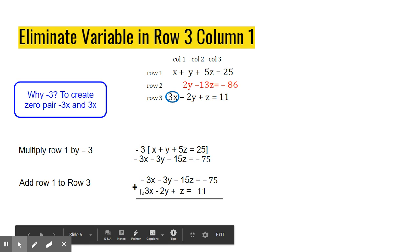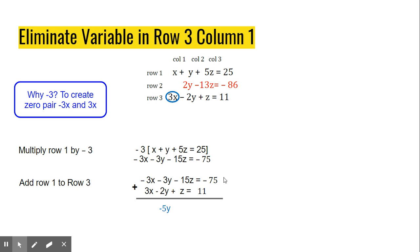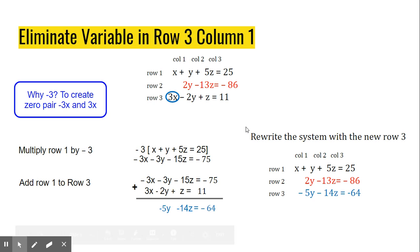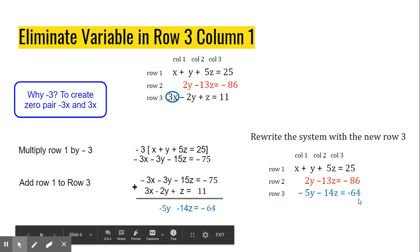Once again, I will be able to eliminate this 3x because this is a zero pair. It cancels out. So I have negative 3y plus negative 2y. That gives me negative 5y. I have negative 15z plus z. That gives me negative 14z. And I have negative 75 plus 11. That gives me negative 64.